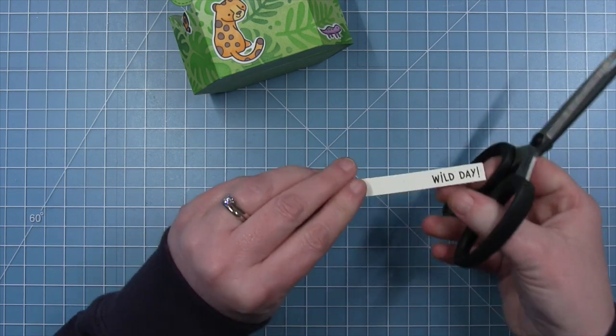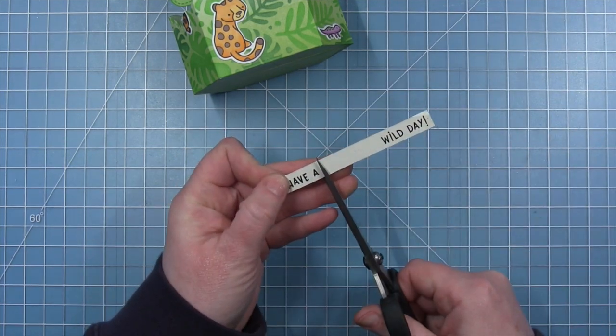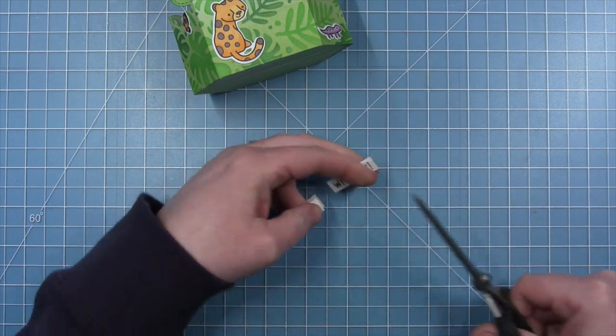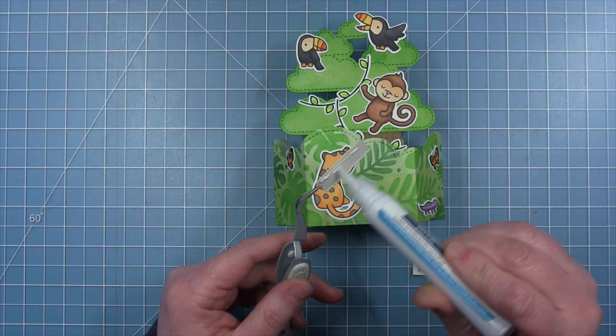So I've cut my long strip and then I'll just trim this with my scissors. So I have the have a and wild day as two separate lines that I can stack one on top of the other.